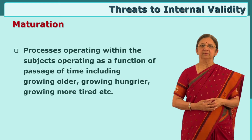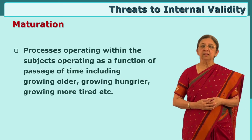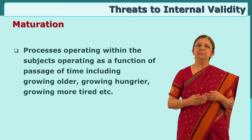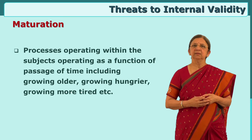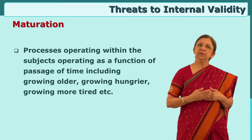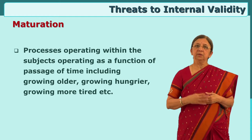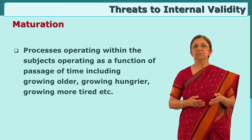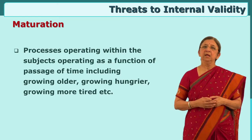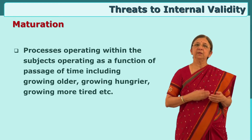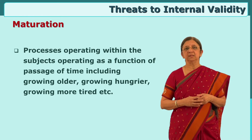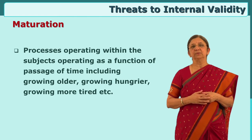The second threat is Maturation. The subjects get older because of age. If our experiment is completed within 15 days, there won't be any effect of age maturation — they are not growing so old. But if your experiment goes on for one year or two years, then the experimental group students will get older and the dependent variable is changing. Is it because of maturation, because of their getting older? The researcher has to think about how to control this maturation.